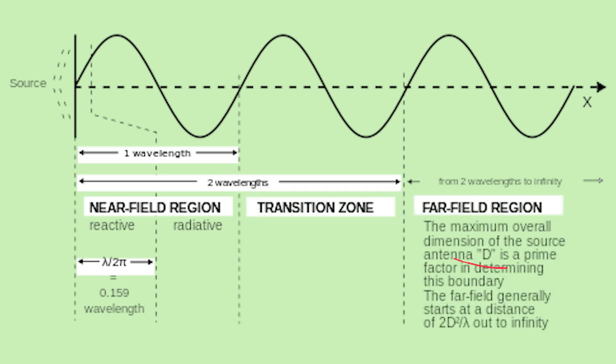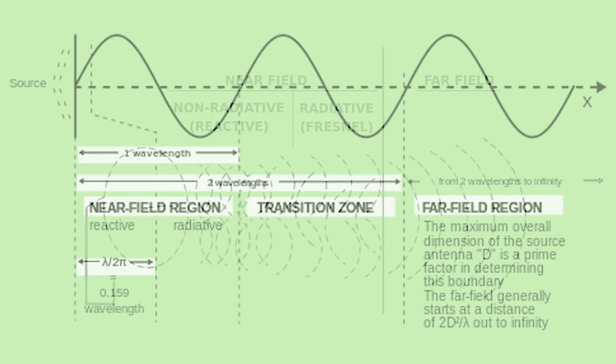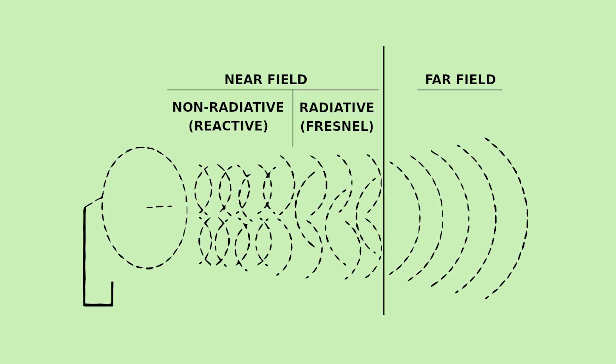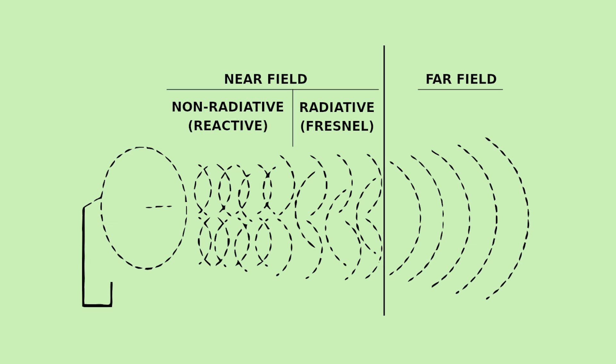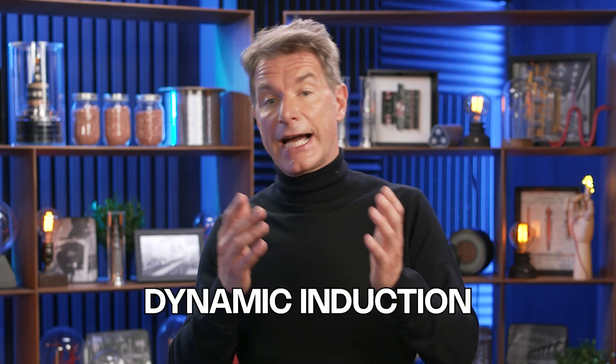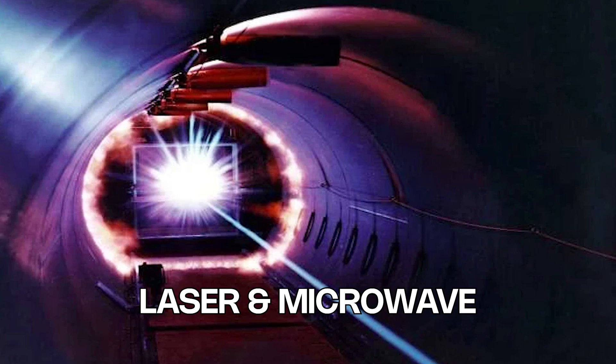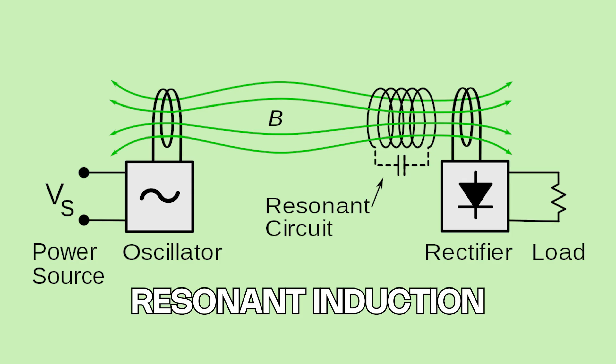and far field transmission, which uses electromagnetic radiation. Where electromagnetic induction produces electromagnetic force in a changing magnetic field, electromagnetic radiation creates electric and magnetic disturbance to transmit energy. Each of these processes have subcategories that vary in degrees of operation: dynamic induction, static induction, laser and microwave power, resonant induction and so on.